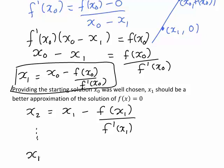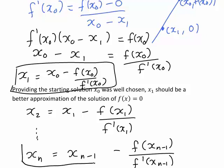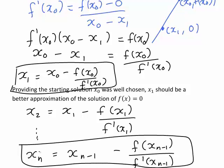What would the nth approximation look like? xn. You might want to pause and think about that for a minute. It would actually be xn minus 1 minus f of xn minus 1 divided by f dashed xn minus 1. And that is the general format of the formula for working out approximations using Newton-Raphson method.